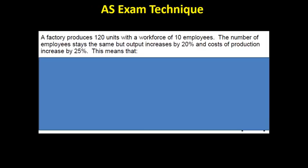Now, this one is a slightly more tricky question. A factory produces 120 units with a workforce of 10 employees. The number of employees stays the same, but the output increases by 20% and the cost of production increased by 25%. So the number of employees stays the same, but output increases by 20%. Now I know that this is the formula for labor productivity. Output divided by number of employees. Now if the output goes up but the employees stay the same, I should immediately understand that they're telling me labor productivity has increased.